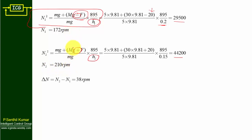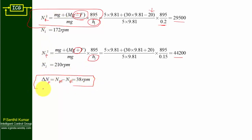Subtracting: delta-nf = n2f − n1f = 210 − 172 = 38 rpm. So 38 rpm is the range of speed of the governor considering the effect of friction. This completes the solution to the problem.